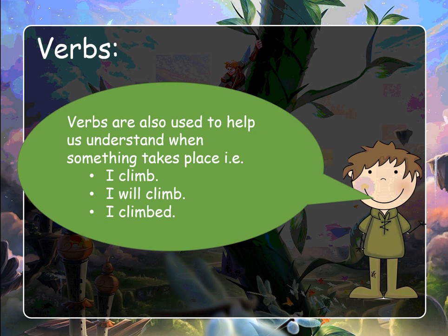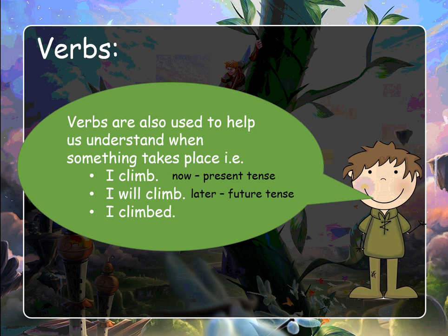So have a think about when each one of these is happening. 'I climb' — that's now, it's happening in the present tense; if you looked out the window, you would see me climbing. 'I will climb' — that's sometime in the future; if you looked out tomorrow, you might see that I've promised and I will be climbing. 'I climbed' — that's before; yesterday I climbed, it happened in the past tense.